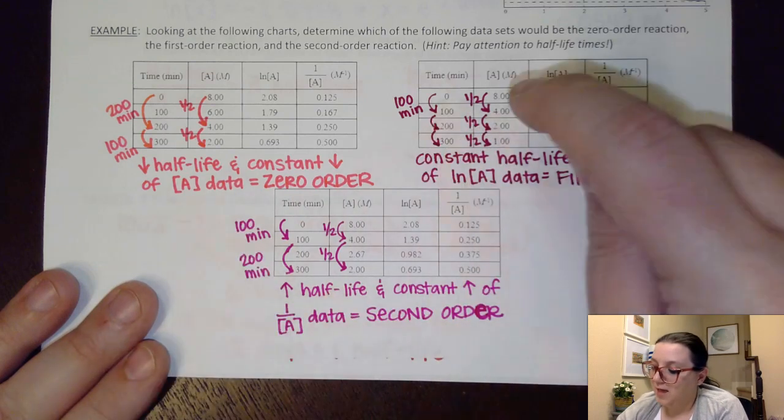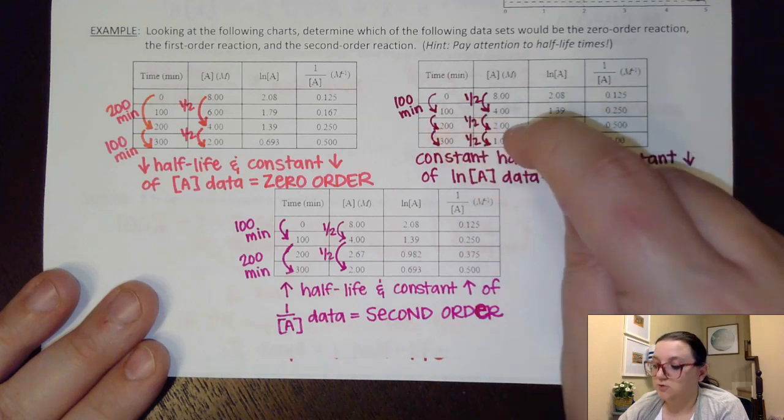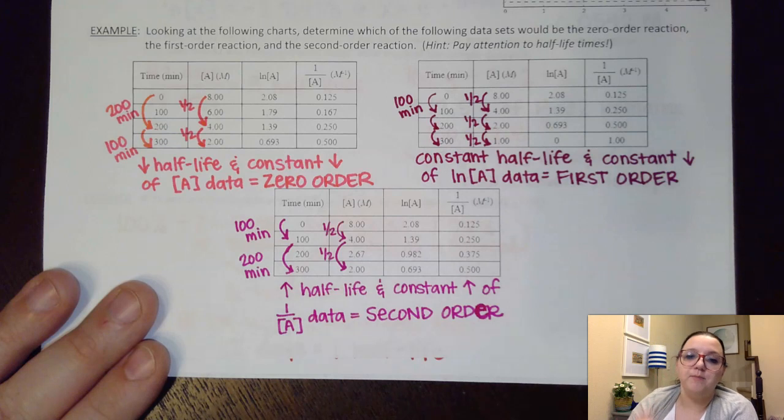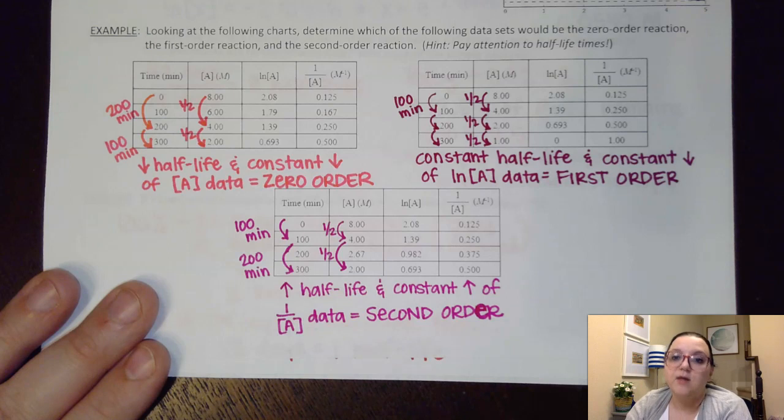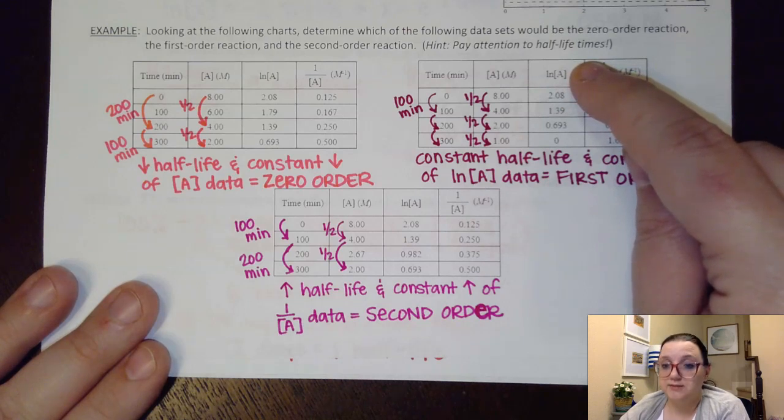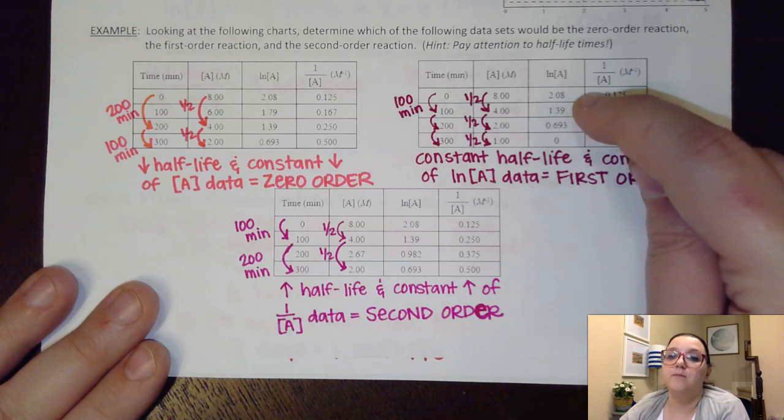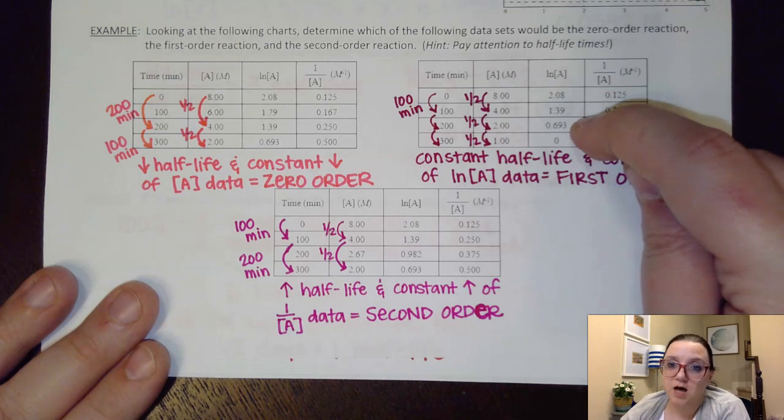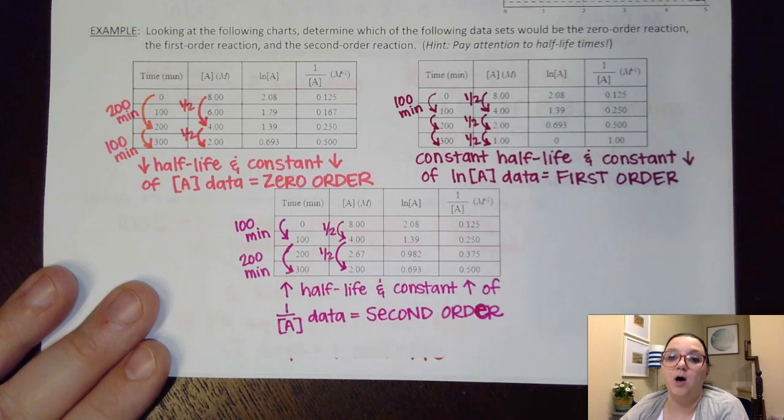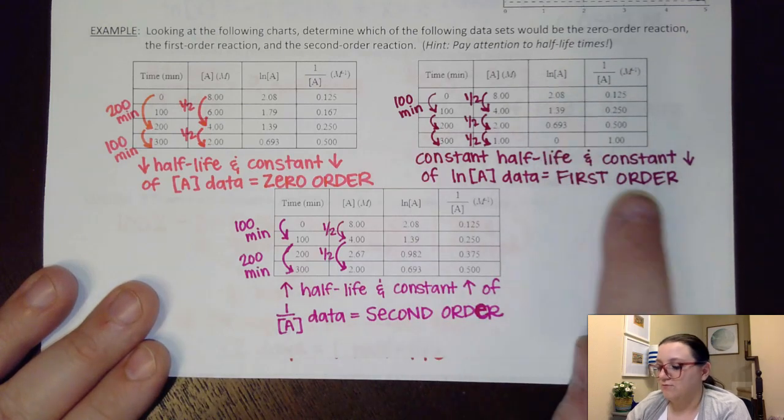All right, on this one here, as I go from 8 to 4, that took 100 minutes. As I halved 4 down to 2, that took another 100 minutes. Halving 2 down to 1 took another 100 minutes. Each time I'm halving takes the same amount of time, that 100 minutes. So I don't know about you, but that kind of sounds like maybe I'm dealing with a first order. The other thing I want to point out is that if I look at the natural log of A data, I see constant decreases happening every single time. 2.08 down to 1.39 is changing about 0.69-ish. Going from there down to 0.693 is again changing by roughly about 0.69. Going from 0.693 down to zero is again changing by about 0.69. And so it's decreasing at a constant rate, meaning this data would have given me a straight line. And remember, the natural log of A versus time graph should be straight if we have a first-order reaction.